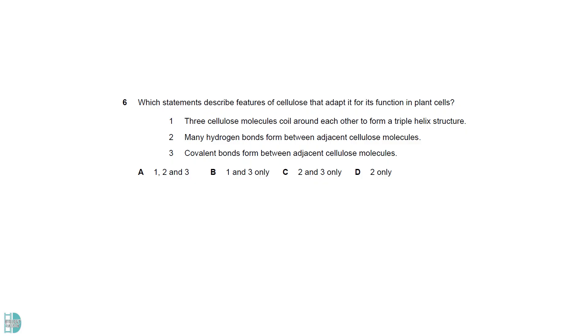1 is incorrect. Cellulose chains do not coil or form a triple helix. Instead, they form straight chains that align to create strong microfibrils and fibers.